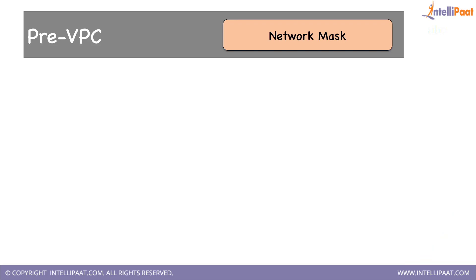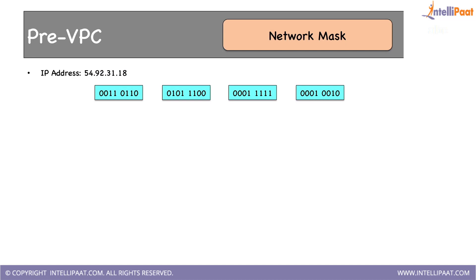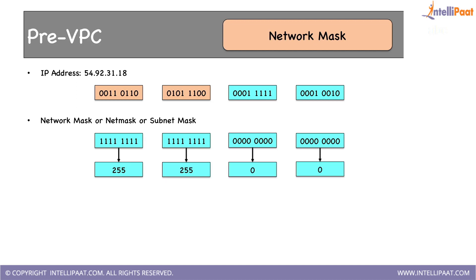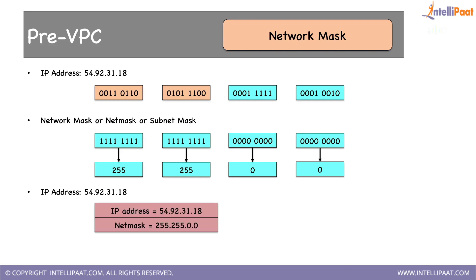Now let's talk about network mask. With the same IP address having four octets of eight bits each, here two octets belong to the network address. Network mask is also called netmask; when used in subnets it's called subnet mask. Since the first two octets belong to the network, we say the first 16 bits are blocked and the network address has been put there, but host bits are available. The blocking is represented by ones and availability by zeros. Converting all ones and zeros to decimal gives 255.255.0.0 — this is another way of demarcating the network address from the entire IP address.